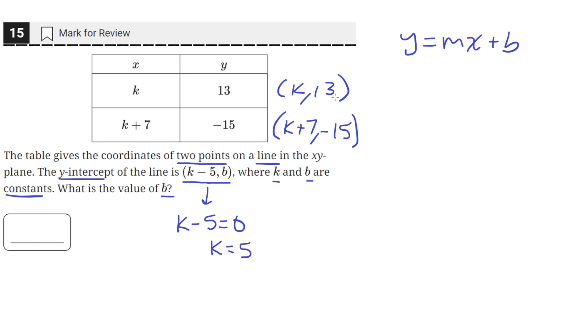Okay, now that we know the value of k, we can turn these coordinates into coordinates with just numbers instead of k. So the first one becomes 5 comma 13, and the second one becomes 7 plus 5, which is 12 comma negative 15.